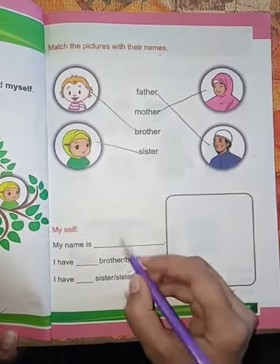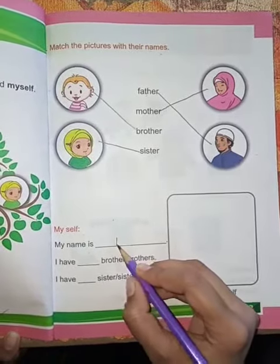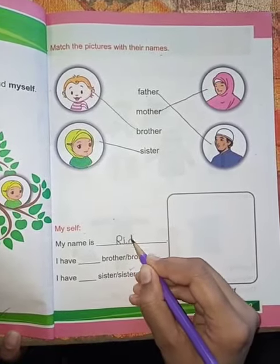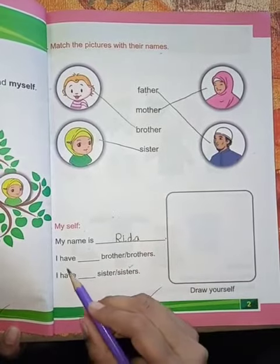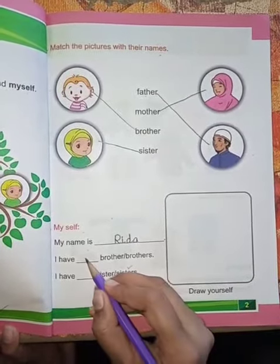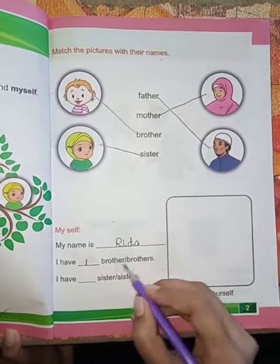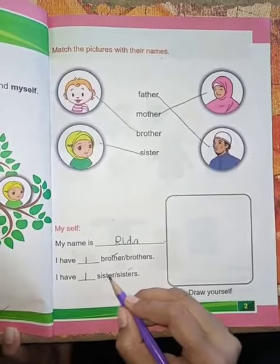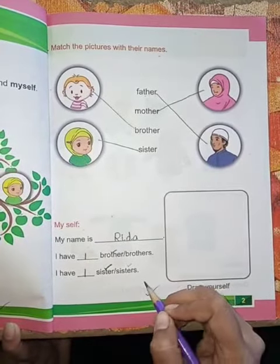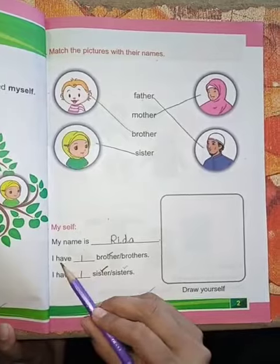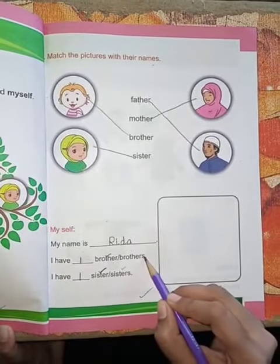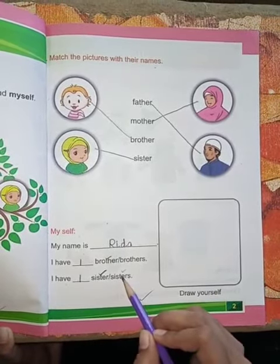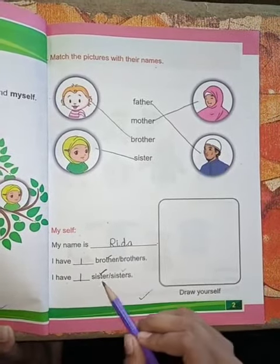My name is Rida. Here you will write your name. I have one brother. I have one sister. If you have two brothers or two sisters, then you write: I have two sisters.